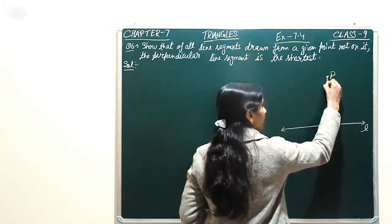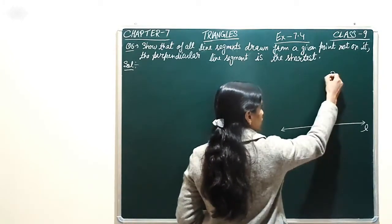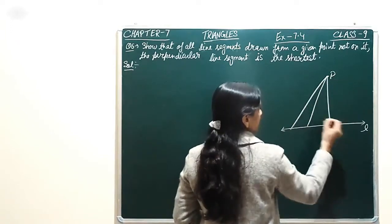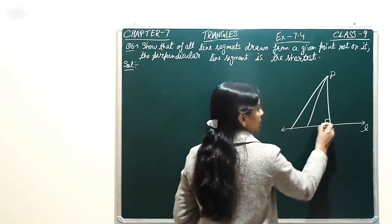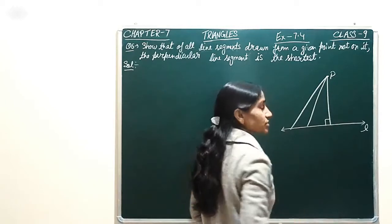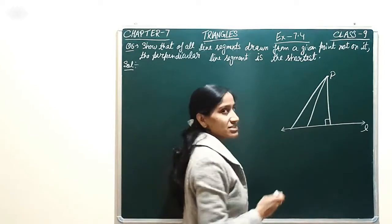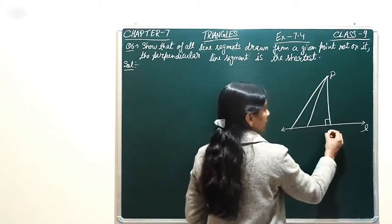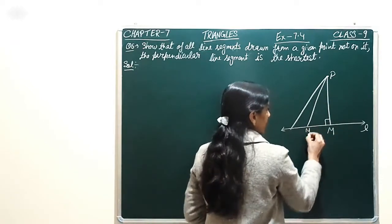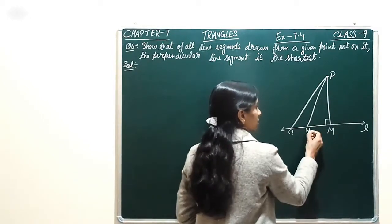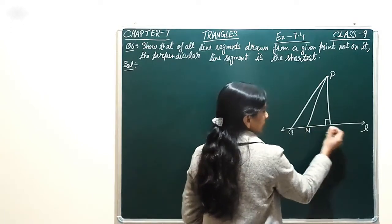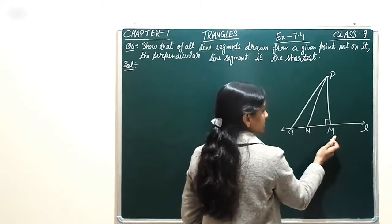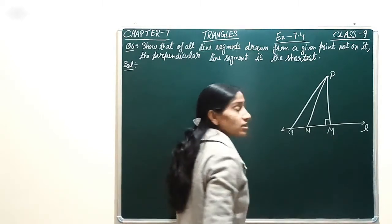If we join to the line here, we draw many line segments. The perpendicular line segment is the shortest. The shortest distance is the line L to P. And here, if we make points M, N, Q — so we have to prove that PN is the smallest and PQ is the smallest.